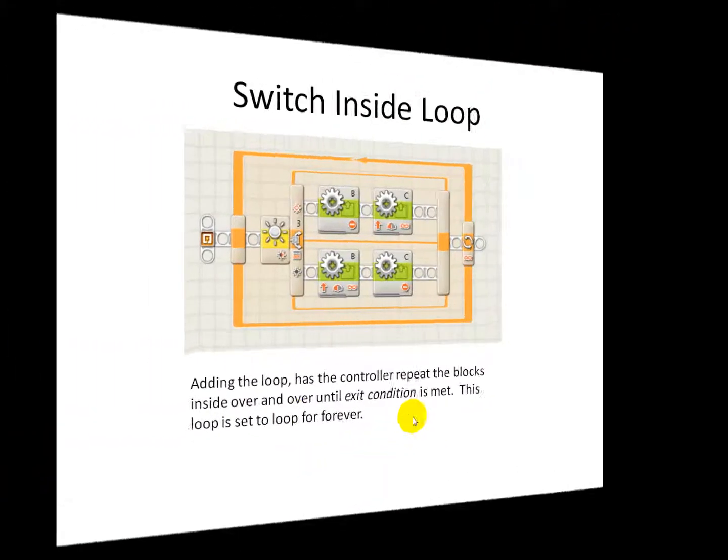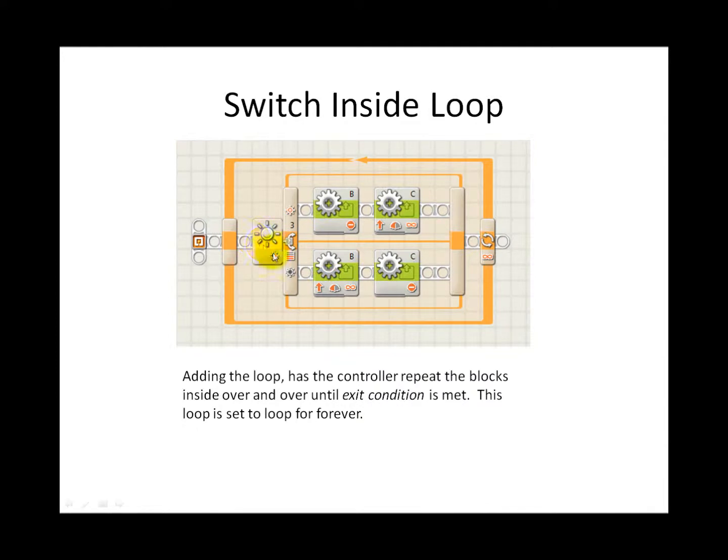The way to program that is you use a switch block and a loop block. As the program starts, it tests the condition. This is a switch block based on a light sensor from port 3, and the condition is set up to be if the light sensor is greater than or equal to 50.